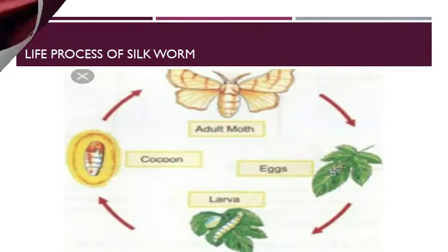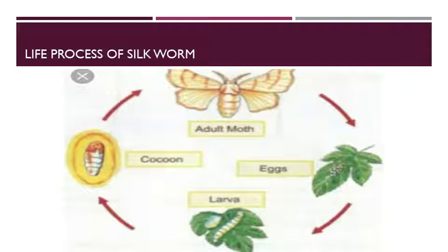The female silk moth lays eggs in groups on leaves. The eggs develop into silk worms, called larvae or caterpillars. The silk worm eats a large amount of leaves for 20 to 30 days and goes through 4 changes of its skin.